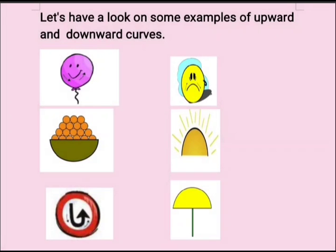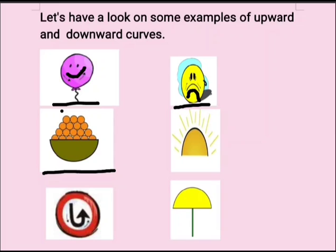Now children, let's look at some examples of upward and downward curves. Here we can see a smiling face. The smiling face forms an upward curve. Here we can see a sad face, and the sad face is an example of a downward curve. This is a fruit bowl here — it's an example of an upward curve.